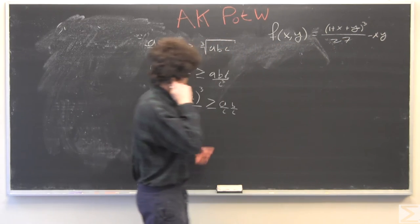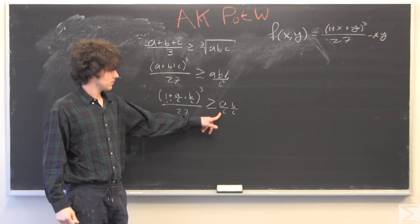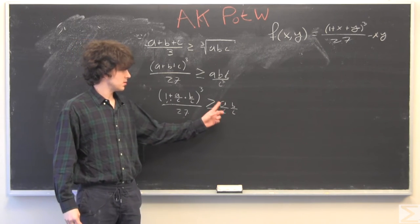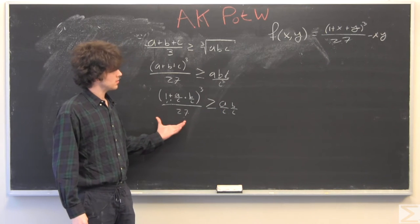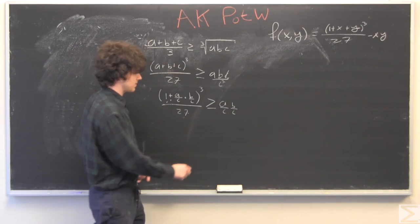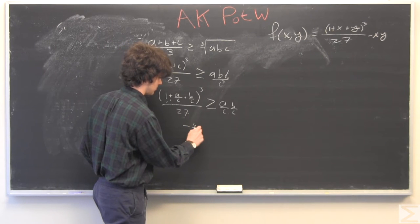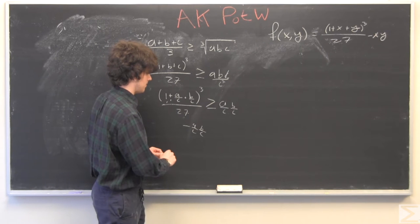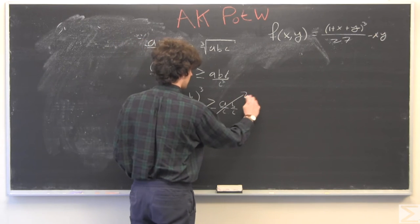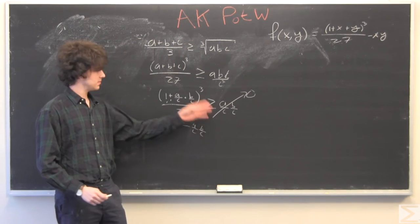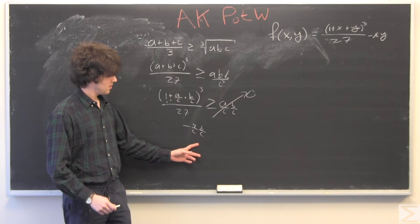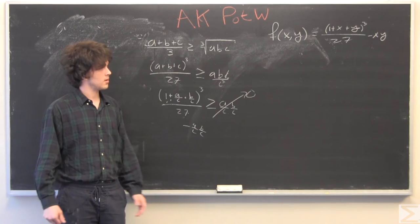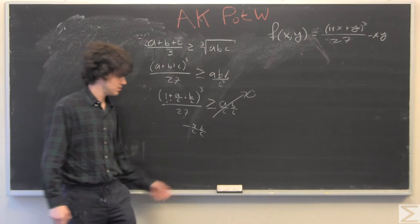So here we have subtracted a over c times b over c from both sides. So this is going to be 0. So we've set f of x equal to this big thing here. And we're looking for when that's greater than 0. So we're going to run a derivative test to check when that is true.